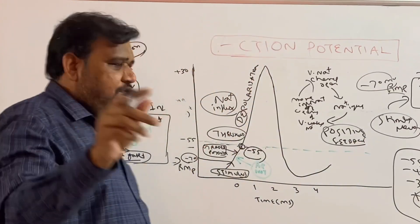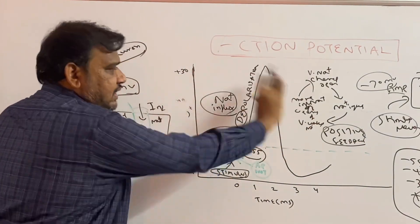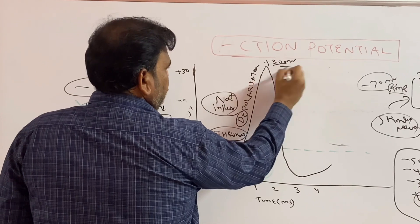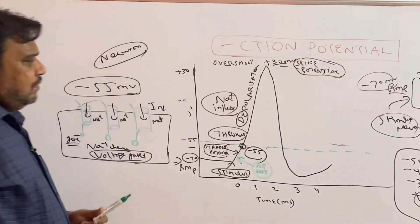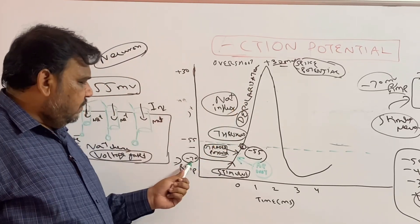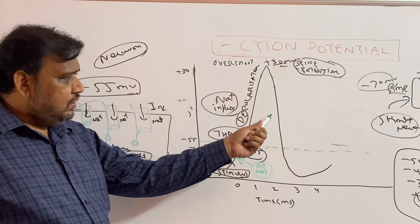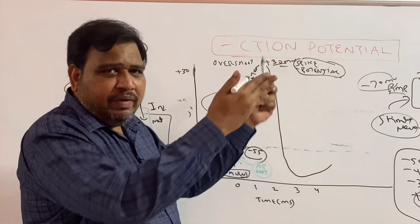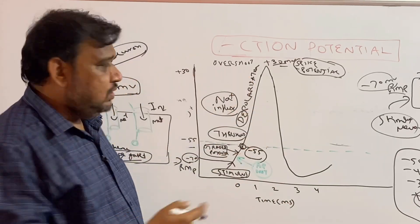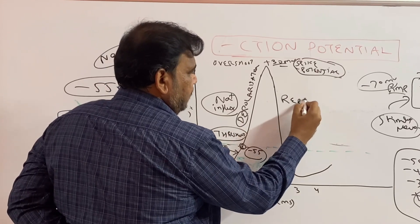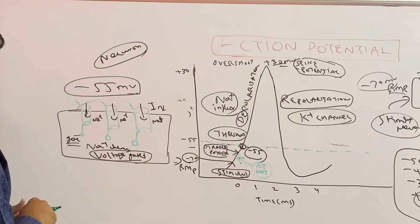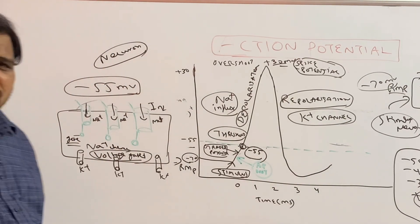So note: one example of positive feedback is the sodium influx occurring in the action potential curve, with depolarization up to almost plus 30 millivolts. We call this the spike potential or overshoot. After the action potential curve reaches plus 30, it again starts decreasing — it is coming back, trying to return to negative inside.